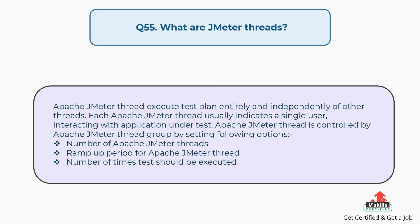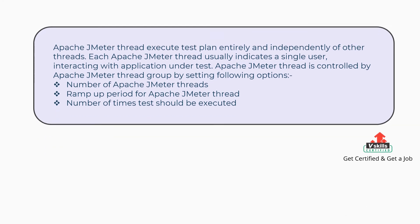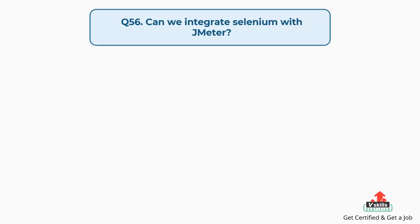Question 55: What are JMeter threads? An Apache JMeter thread executes the test plan entirely and independently of other threads. Each thread usually represents a single user interacting with the application under test. JMeter threads are controlled by the Thread Group, with options for: number of threads, ramp-up period, and number of times the test should be executed.